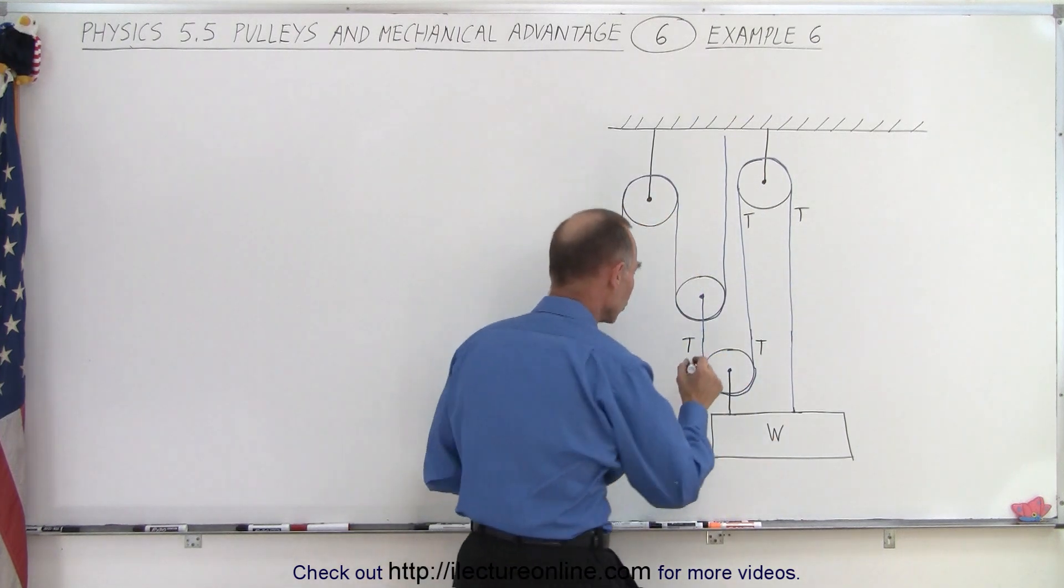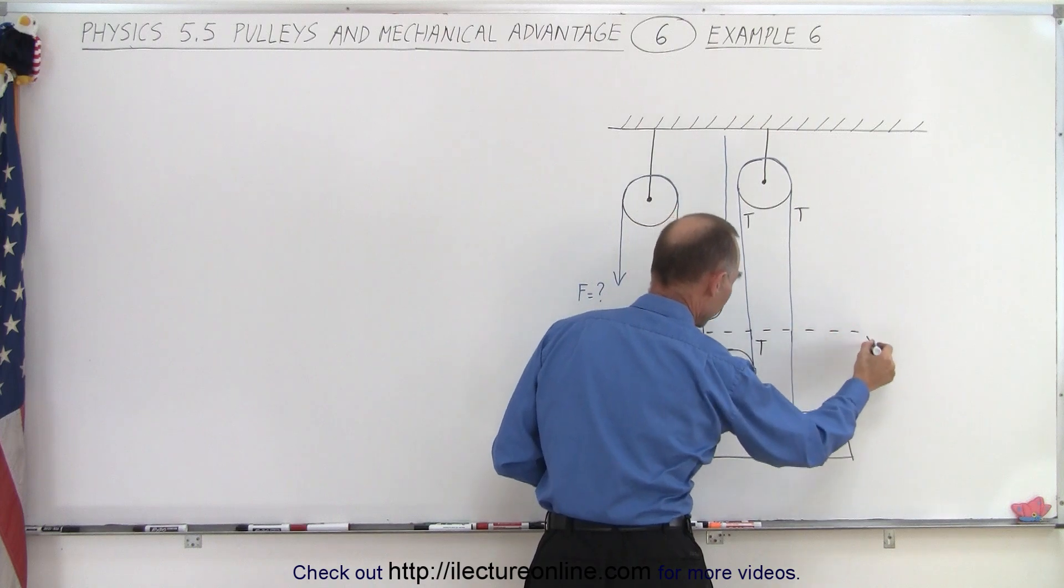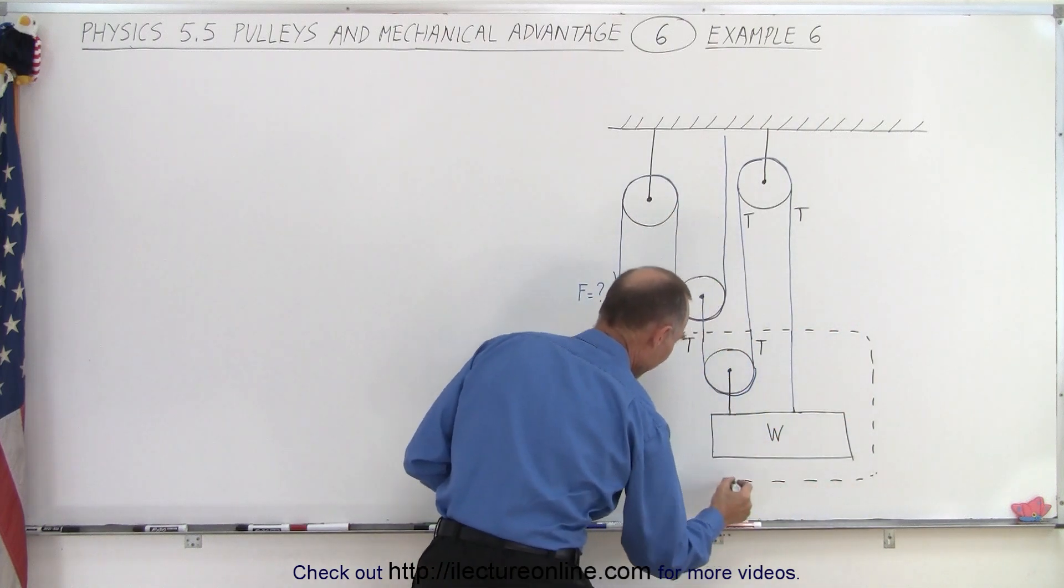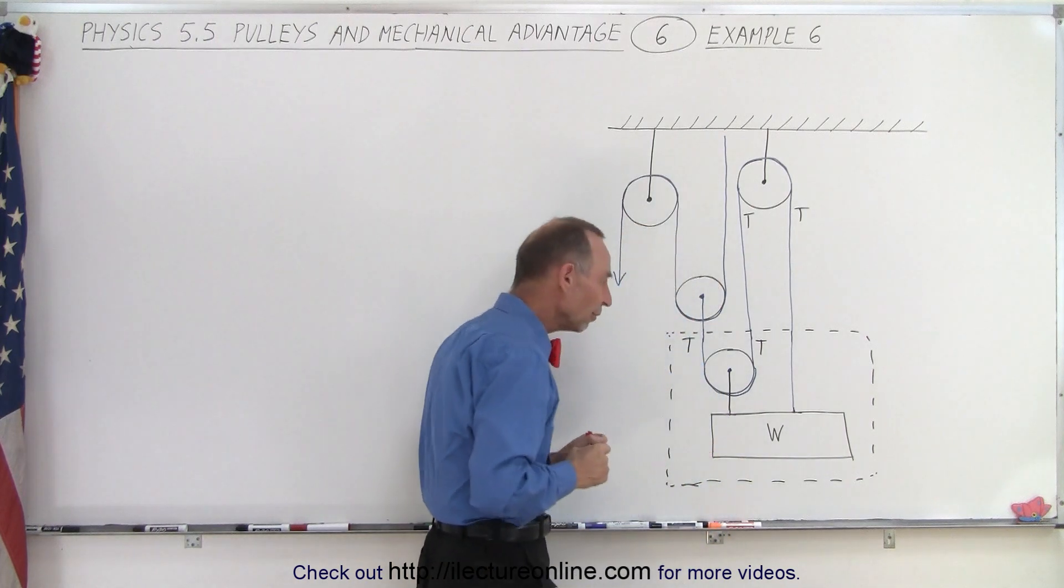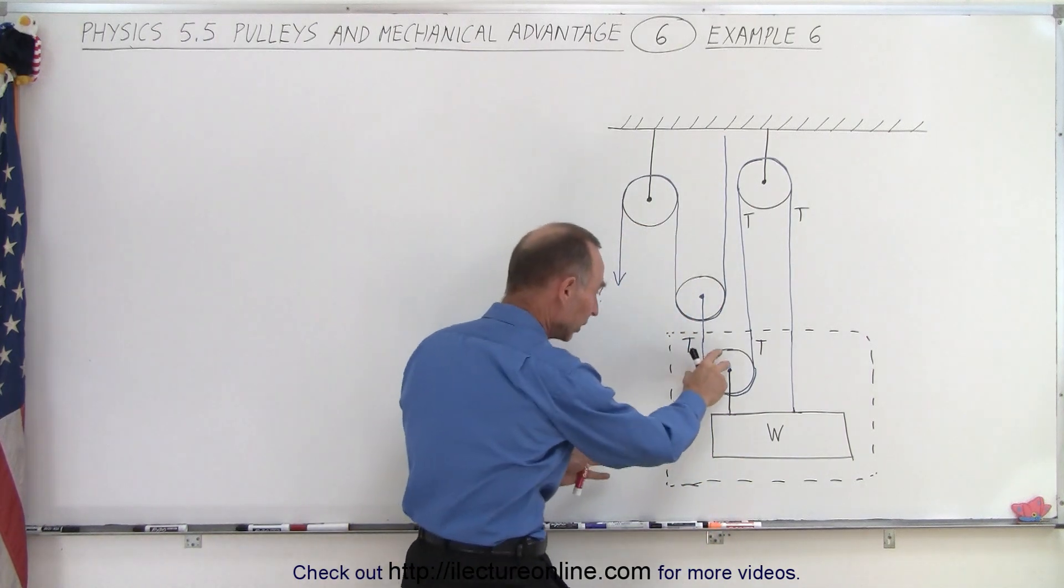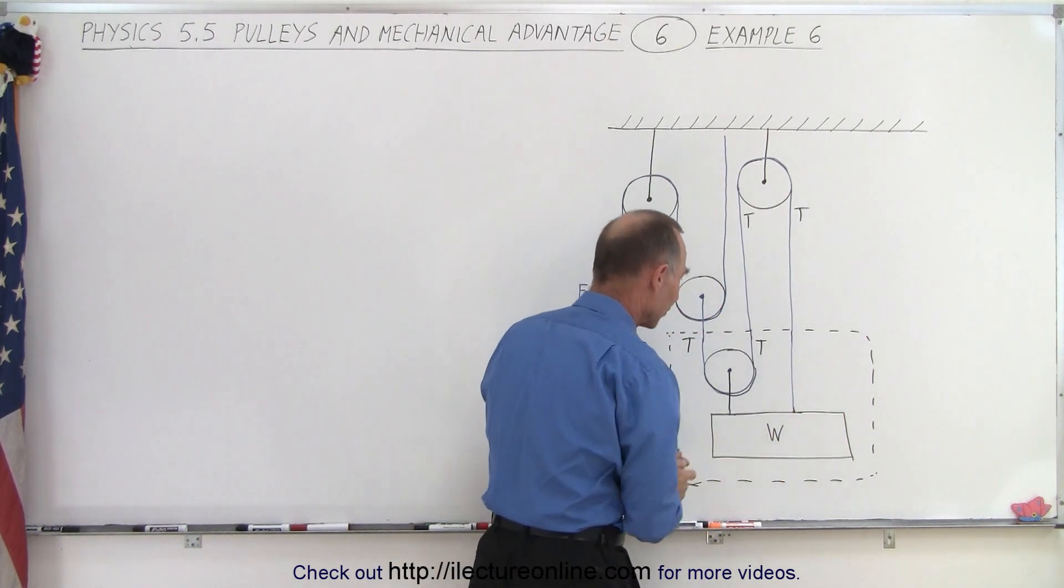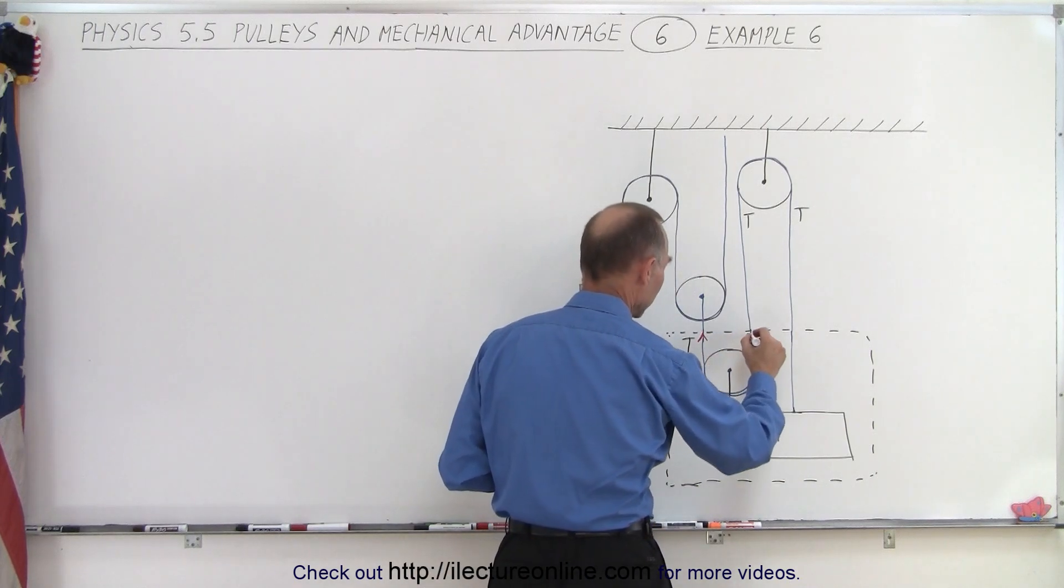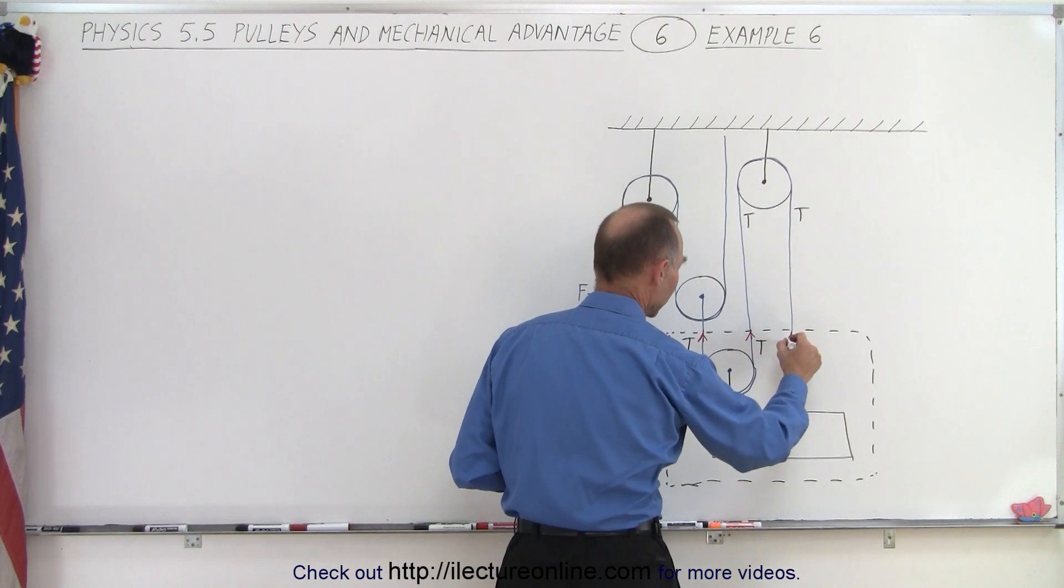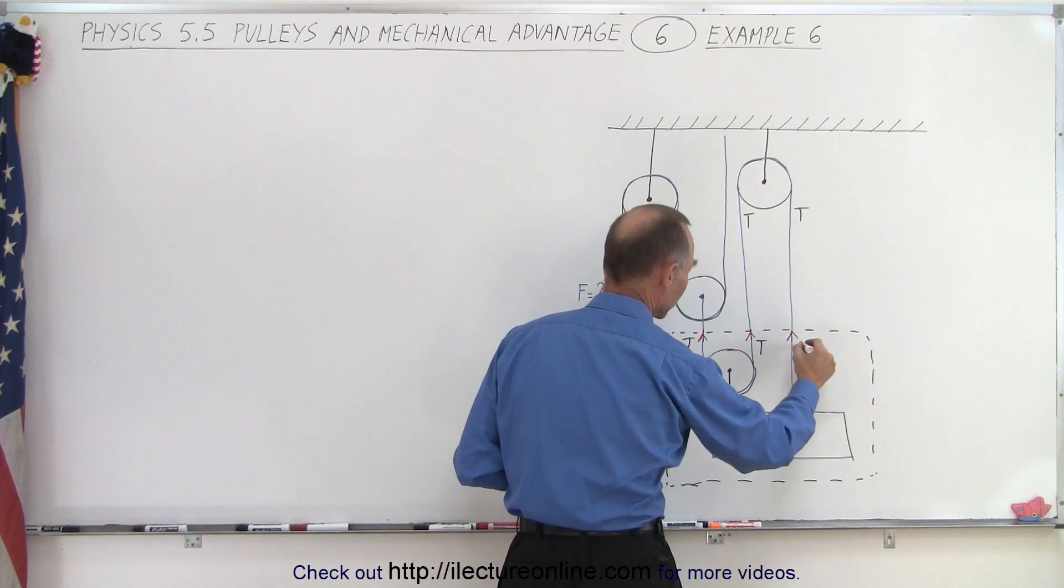Then we're going to draw a free body diagram around that pulley and this block. And what are all the forces acting on the pulley and the block inside this free body diagram? Well, first of all, we can see that we have a force pulling up this way, we have a force pulling up this way, and a force pulling up this way, which also must equal T.